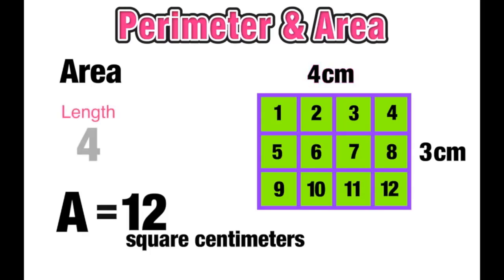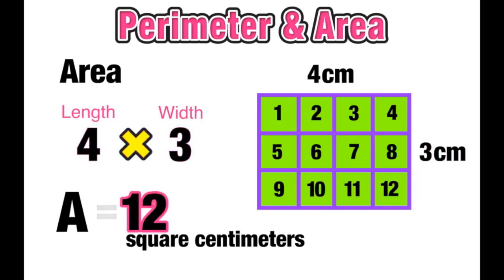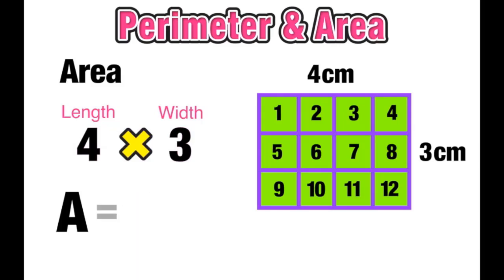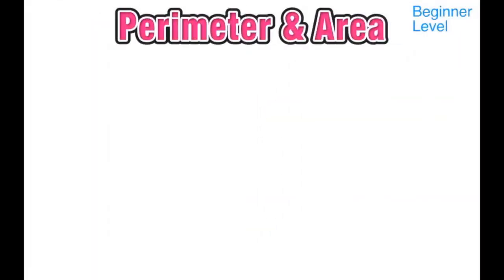Notice that the length of four centimeters and the width of three centimeters, when multiplied together — four times three — equals 12, which was our area. This rule applies to finding the area of any rectangular figure: area equals length times width. Now that we know this, let's apply it to some real-life situations.